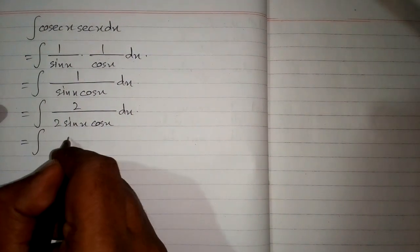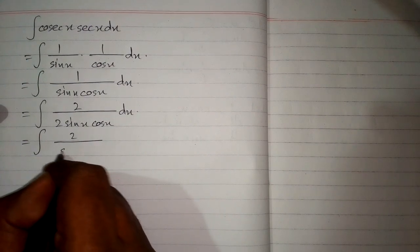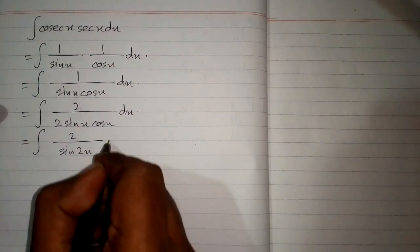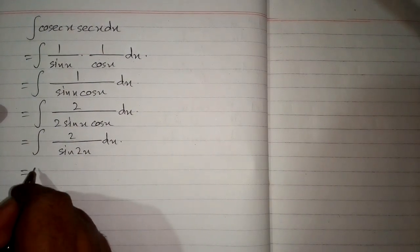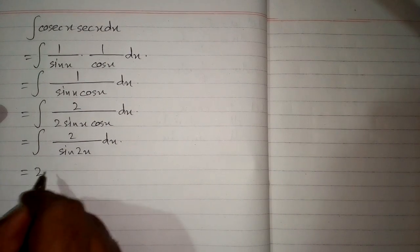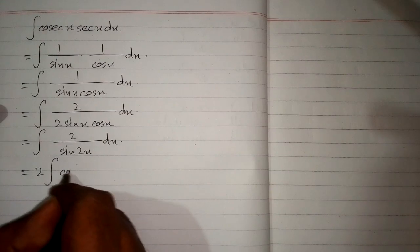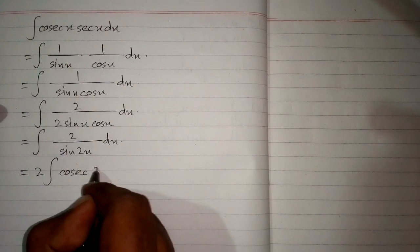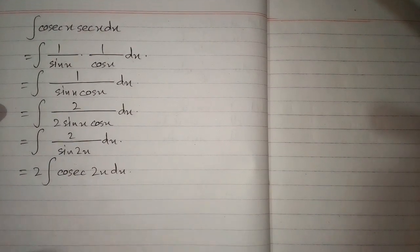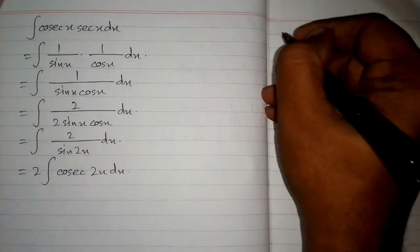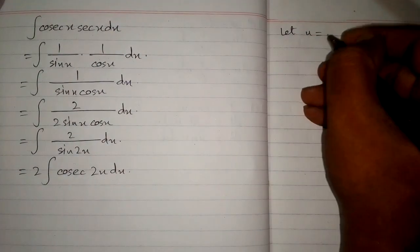We know that 2 sin x cos x is sin 2x, and then we write 2 before the integral and 1 upon sin is cosecant, so we have 2 times the integral of cosecant of 2x dx. Now let u equal 2x.